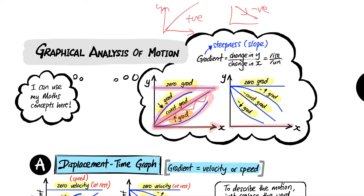Now for the right-hand side of the terrain: a flat path has zero gradient. If you're walking downhill at a constant steepness, that's a constant but negative gradient. If you go downhill and it gets steeper and steeper, the steepness is increasing — so it's a negative increasing gradient. And if you go downhill and it gets less and less steep, that's a negative decreasing gradient.